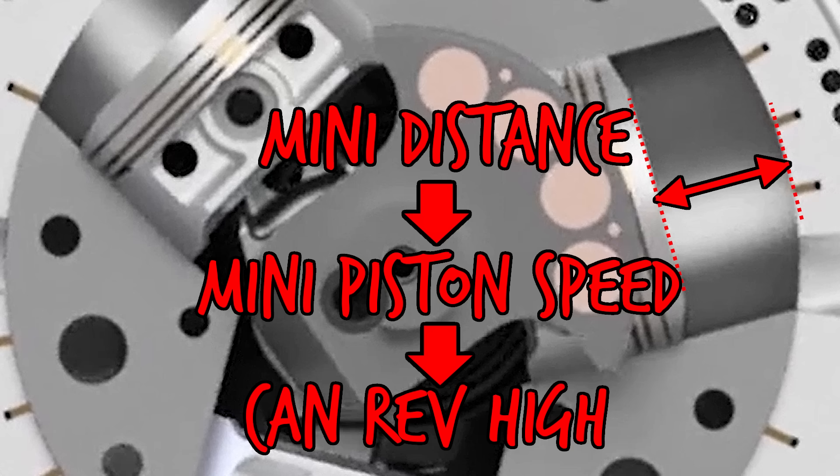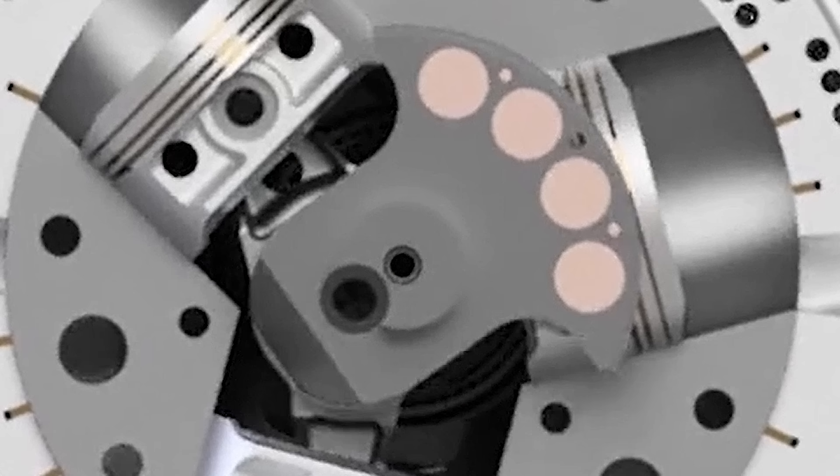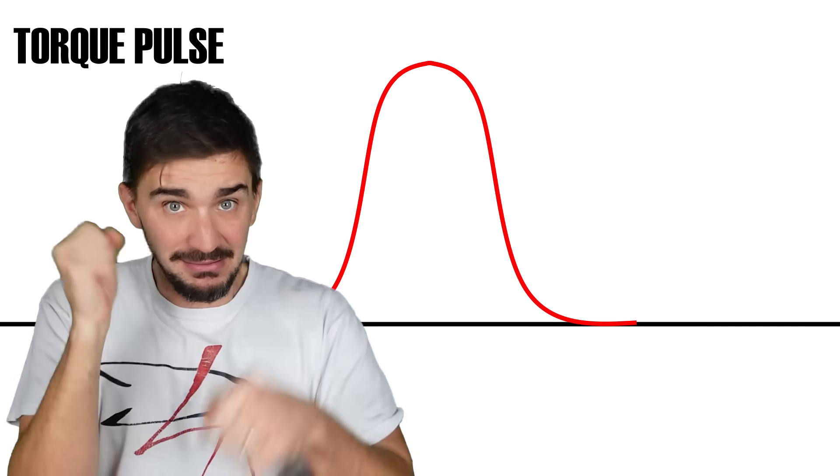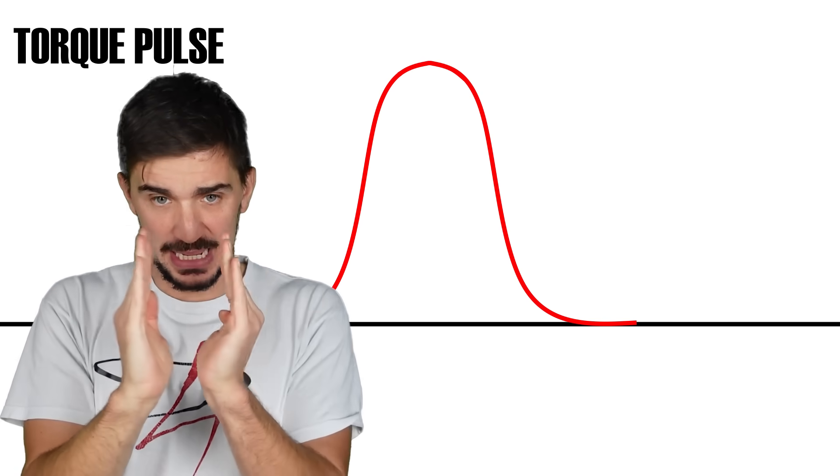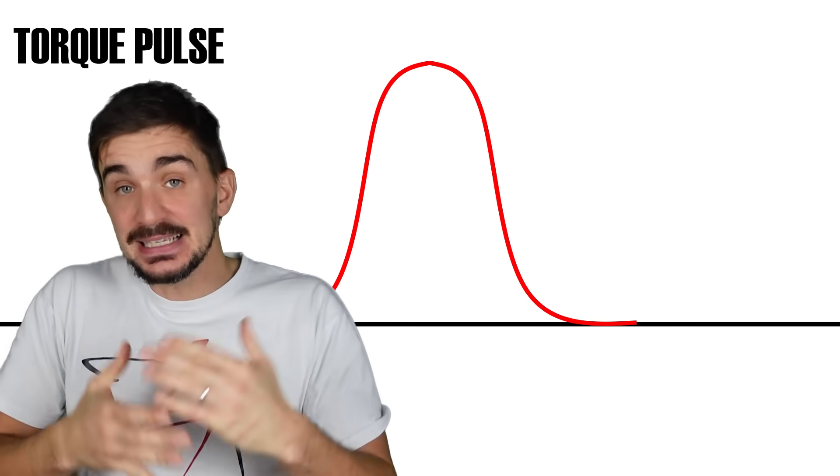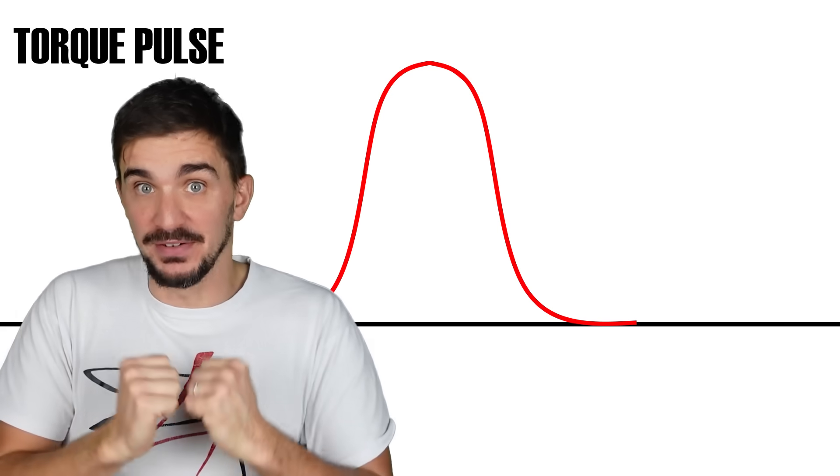But because each individual combustion has minimal leverage at its disposal, it means that each combustion event creates a small torque pulse. This is why we need to stack up thousands of torque pulses over a short period of time to create an adequate power output. Since each individual punch is weak, we must deliver a lot of punches over a period of time to create some damage. This is why we must rev high.